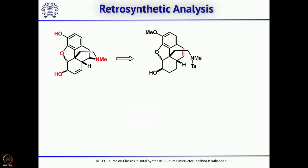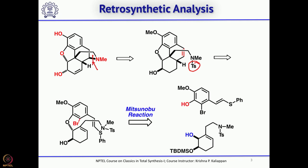The first disconnection is this bond, which can be introduced using a hydroamination reaction. First you remove the tosyl group, followed by intramolecular hydroamination, to introduce this particular bond. Later one has to introduce this double bond — for that you have a hydroxyl handle which can be used. Then this is the key reaction: the 5-exo radical cyclization reaction.